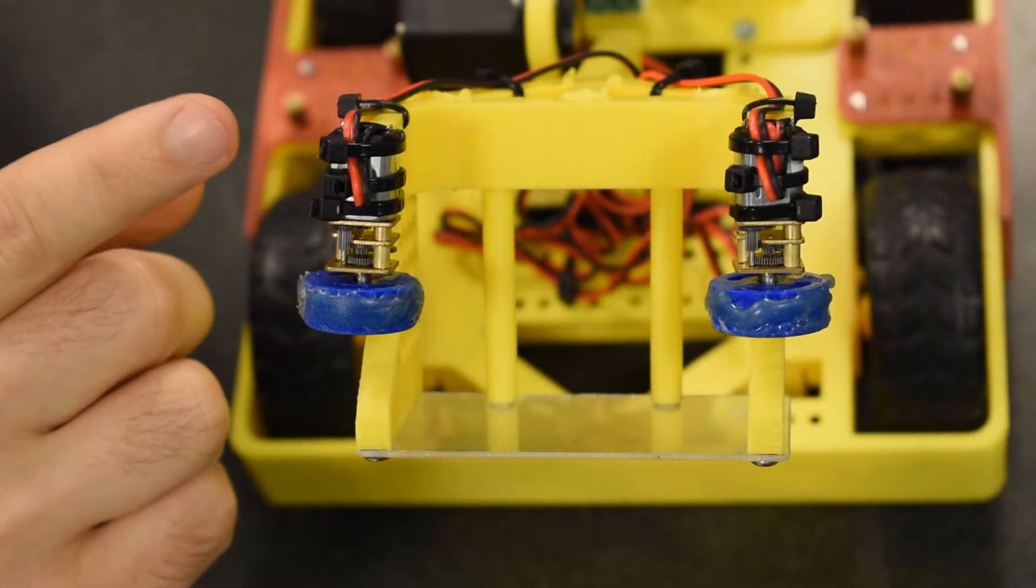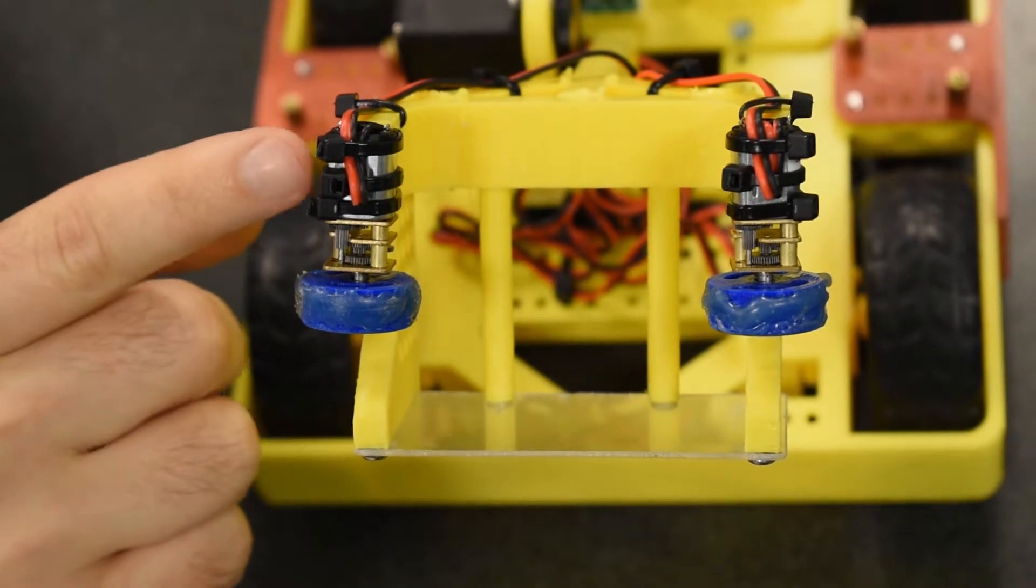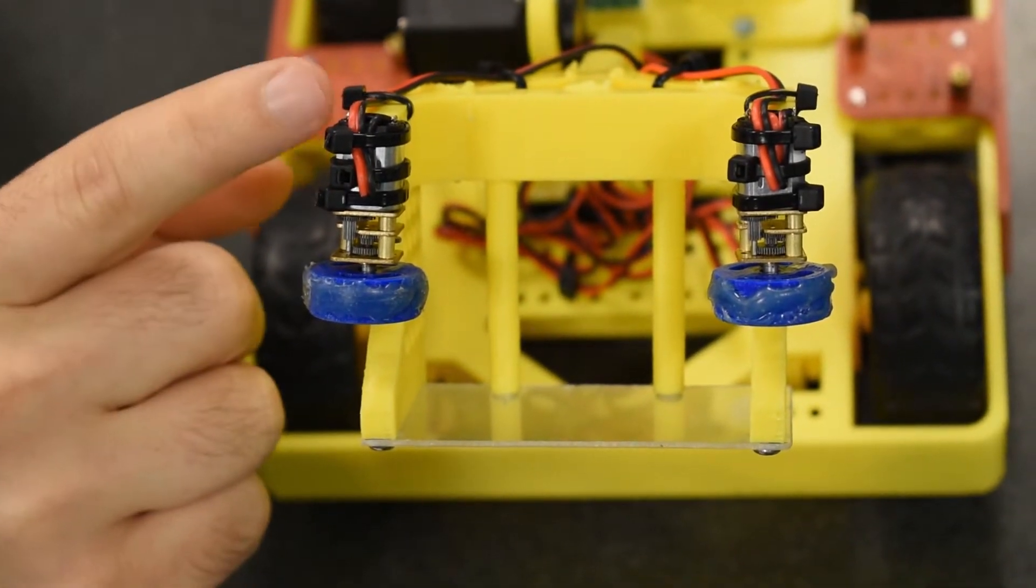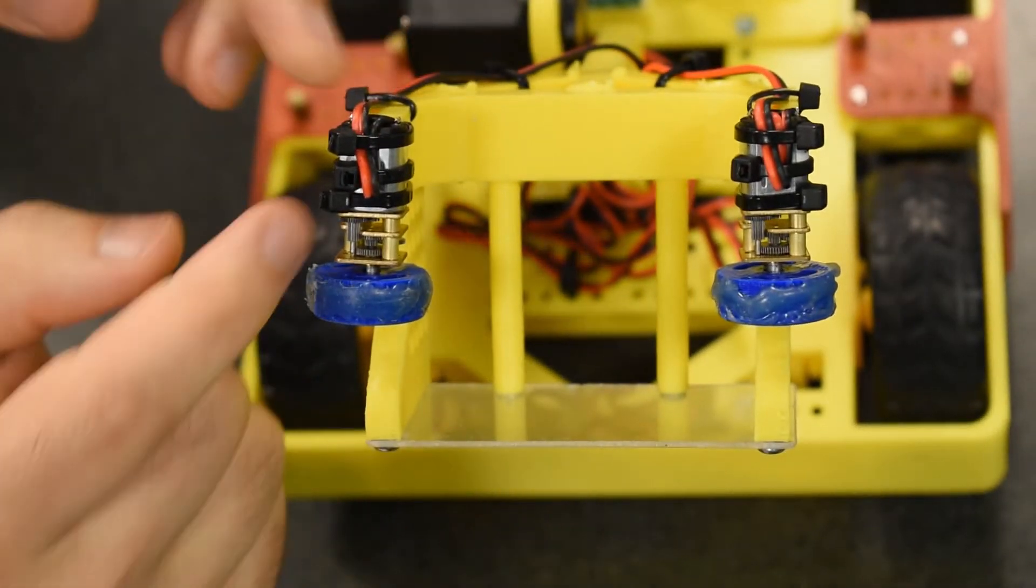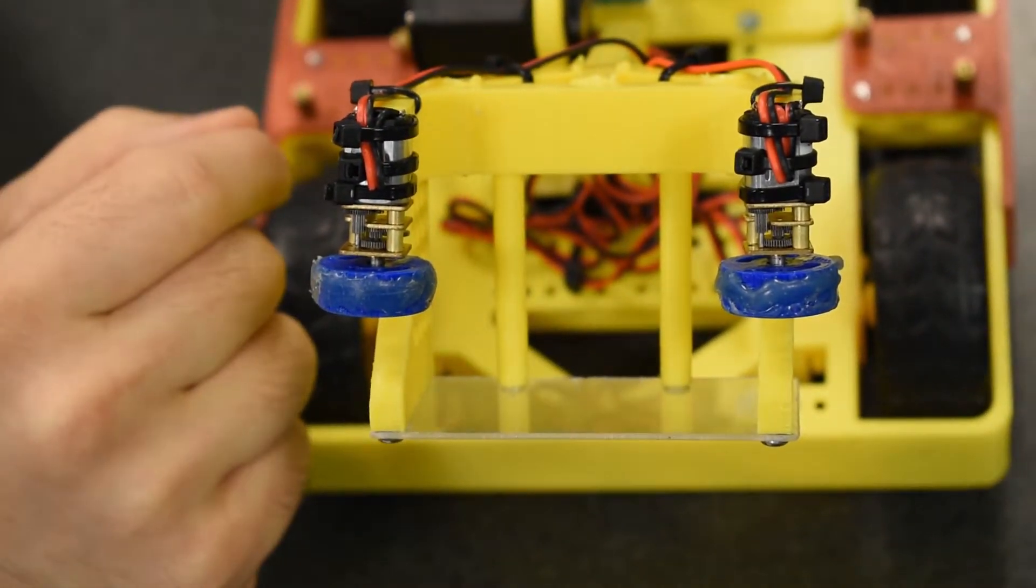Again, we're still applying strain relief. This middle zip-tie is holding the wires to the motor chassis before it wraps around so that any yanking on the wire here won't damage those delicate connections.